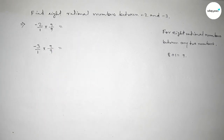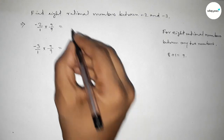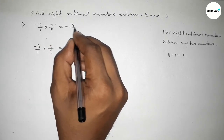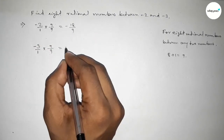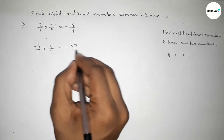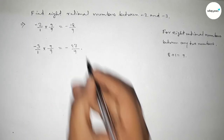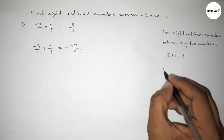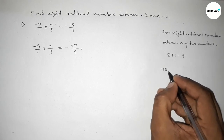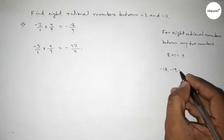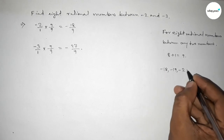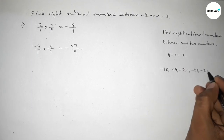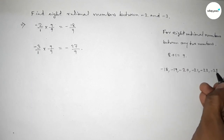So here we get minus 18 over 9, and here minus 27 over 9. Now between minus 18 and minus 27, we can get eight negative integers. So first write down here all the negative integers.